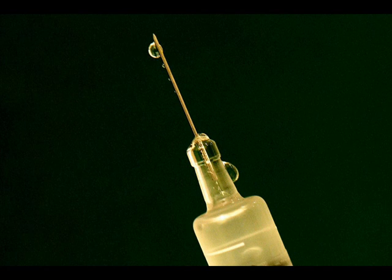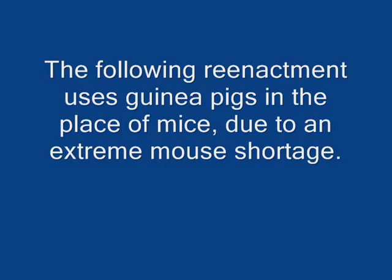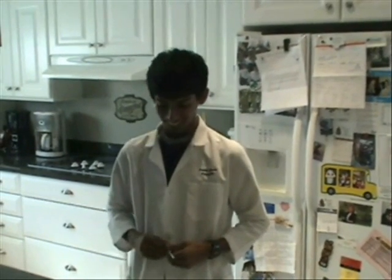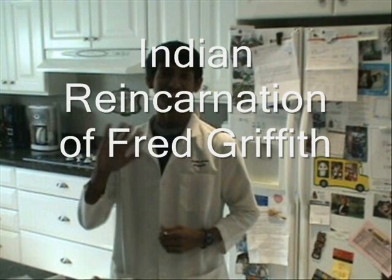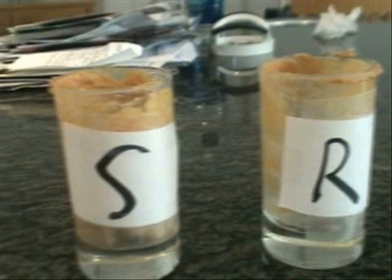In his attempt to develop a vaccine to prevent pneumonia infections, he would uncover a mystery he would never be able to solve. In his famous experiment, Griffith tried to develop his vaccine using two strains of the Streptococcus pneumoniae bacterium — a rough, or R strain, and a smooth, or S strain.